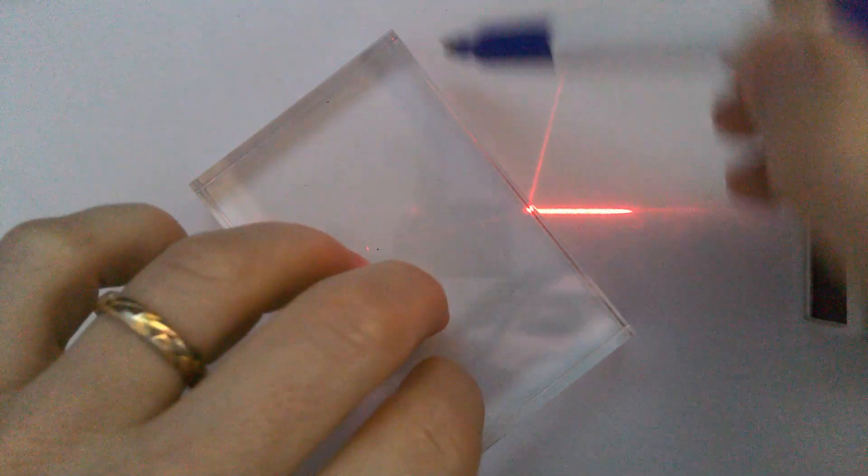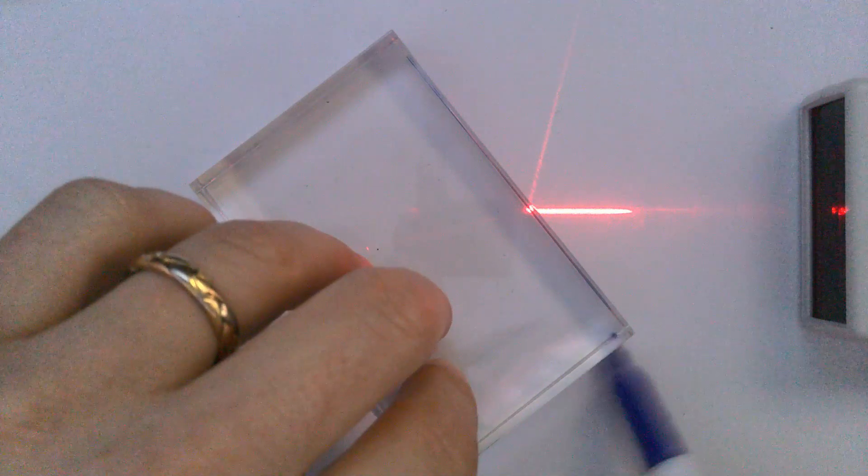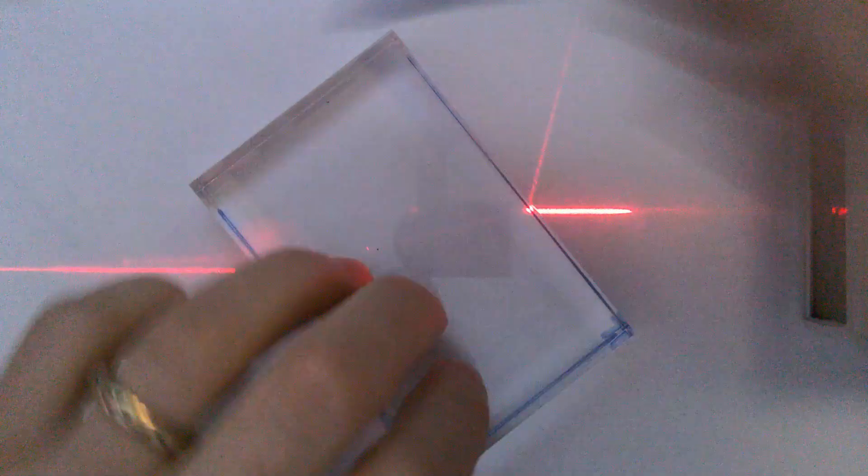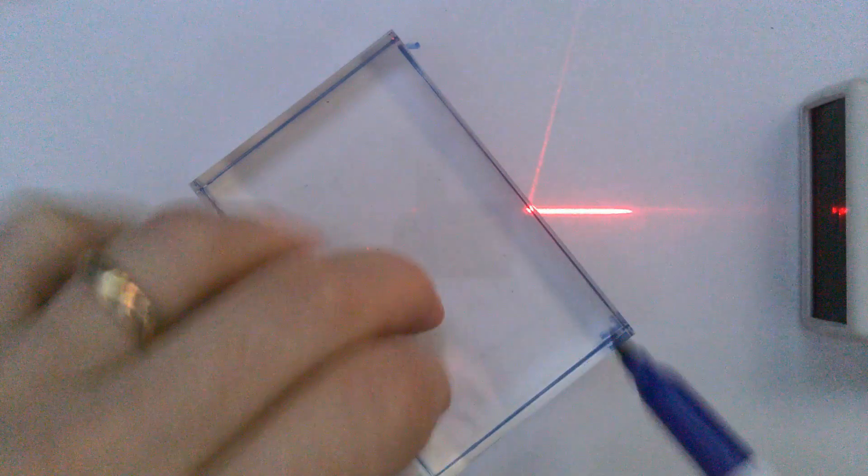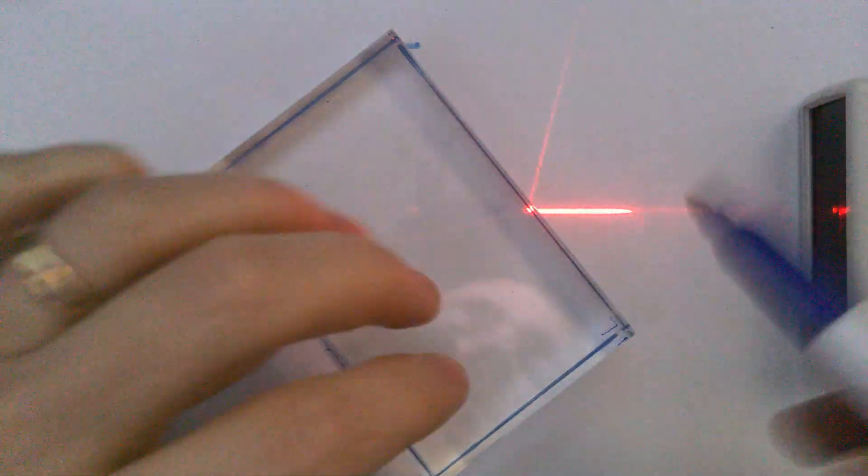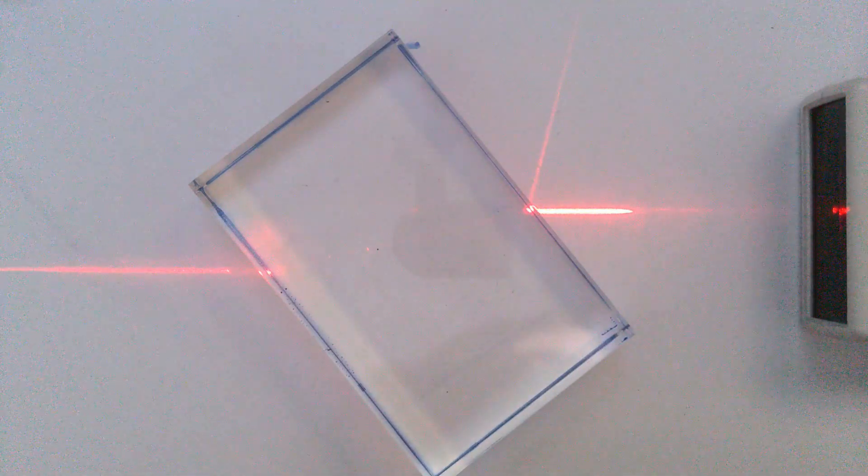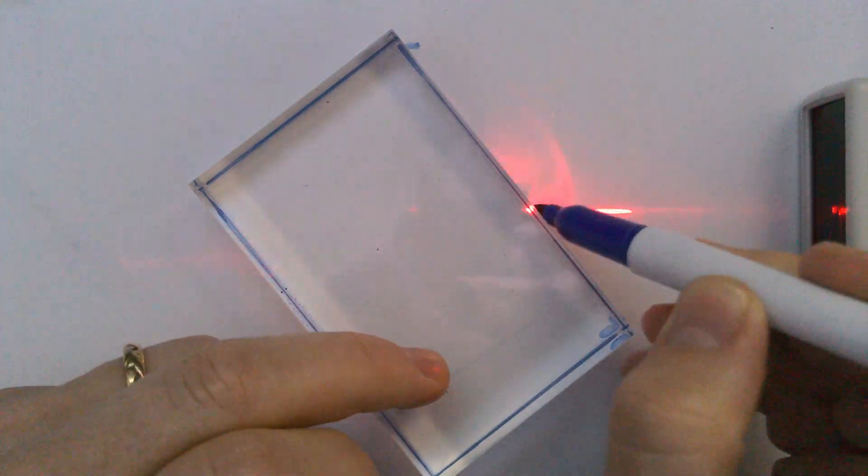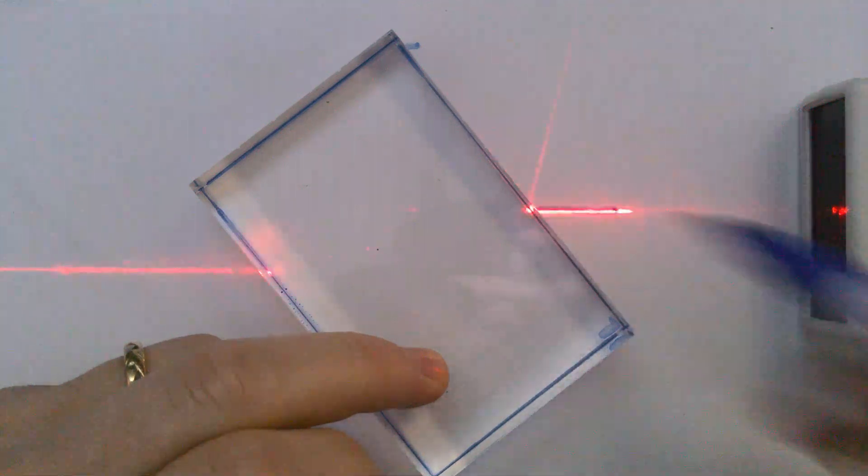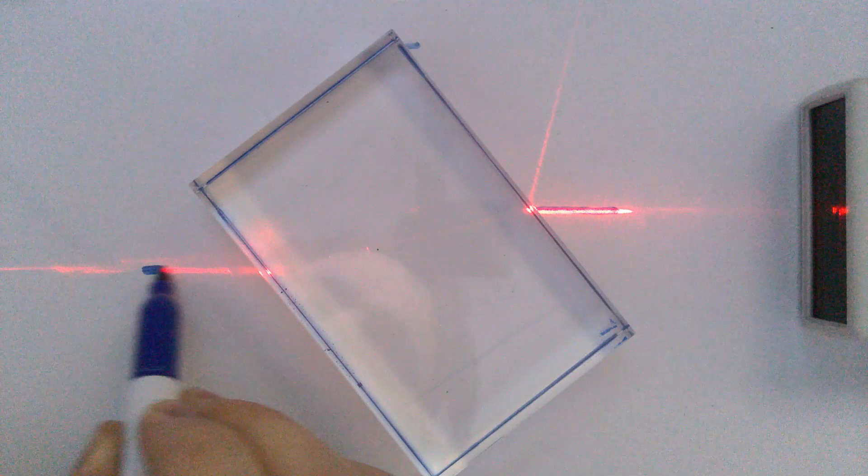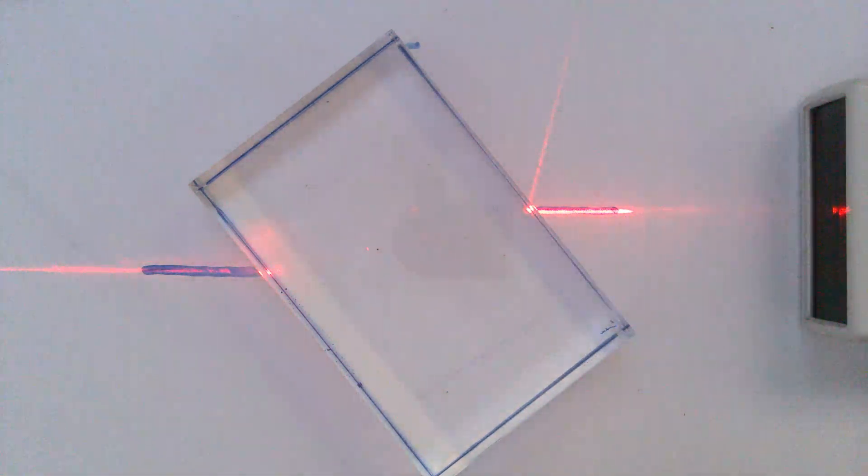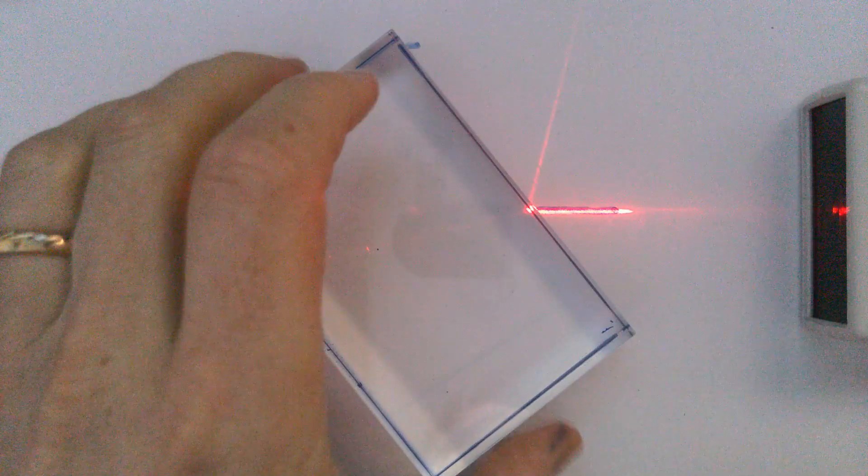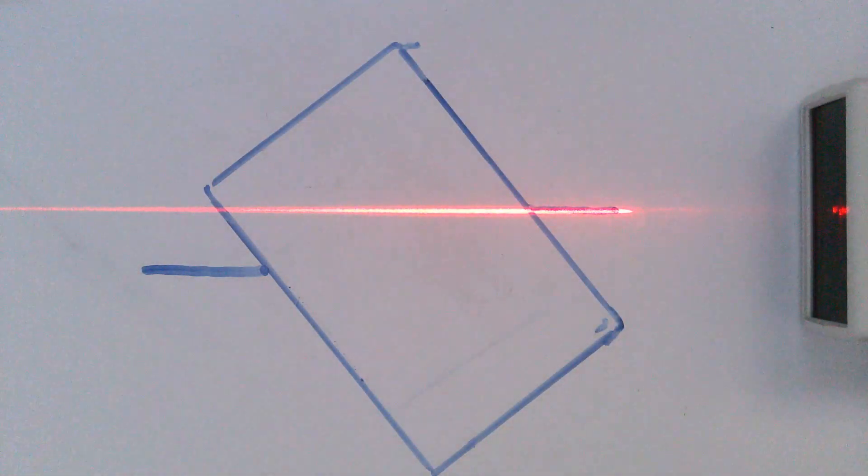So the first thing I'm going to do here is I'm going to trace the outline of the block. Obviously, it can be neater than Steve when you're doing this, but I'm tracing the outline here of the block because we'll be using that in a moment. And we can see now that we end up with the ray obviously going straight across because there's nothing to refract it.